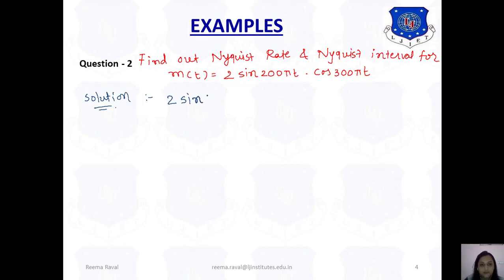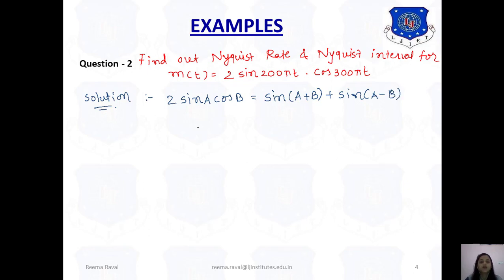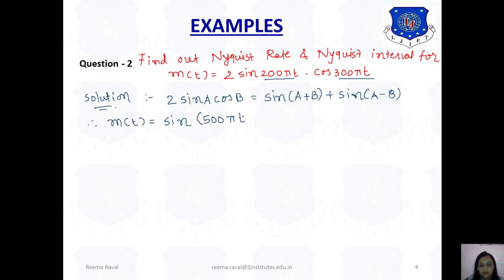For multiplication form, we apply the trigonometric identity: sin(A)·cos(B) = ½[sin(A+B) + sin(A−B)]. Using this, m(t) becomes sin(500πt) + sin(100πt), where 200πt + 300πt = 500πt and 300πt − 200πt = 100πt.